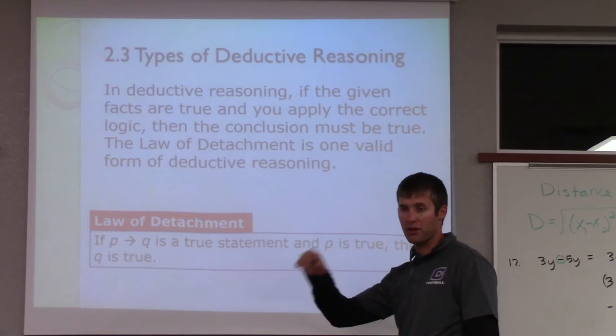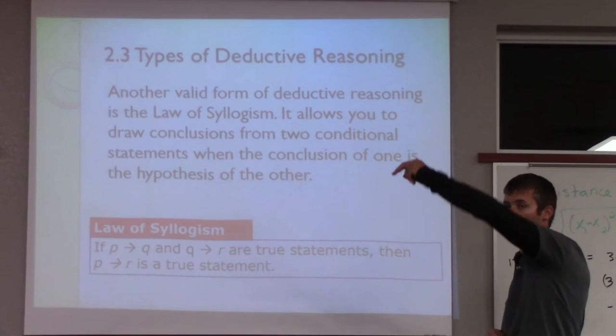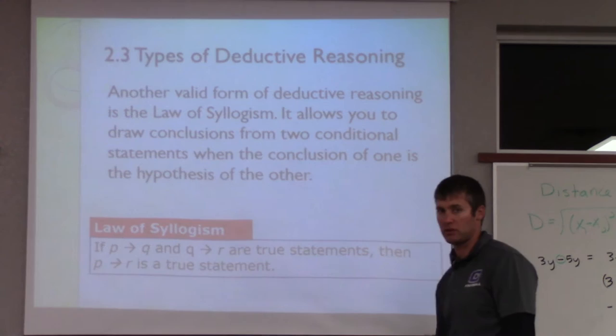Then we'll go through the law of syllogism. A law of syllogism is an if-then statement, but it's going to take us through a series. For example: if Sue is taller than Jane and Jane is taller than Joe — what can we conclude from there? So we're going to have three statements, whereas in a law of detachment you just have one statement.